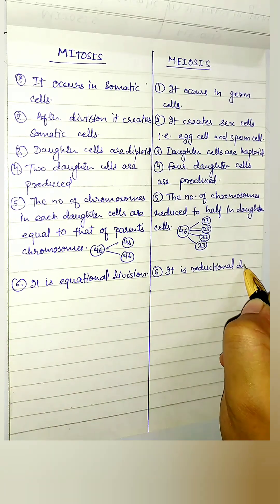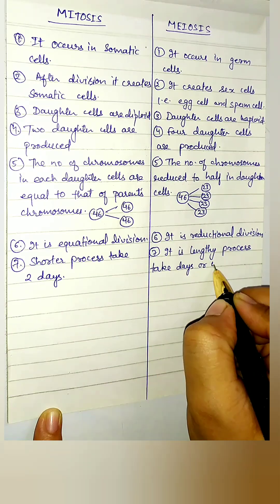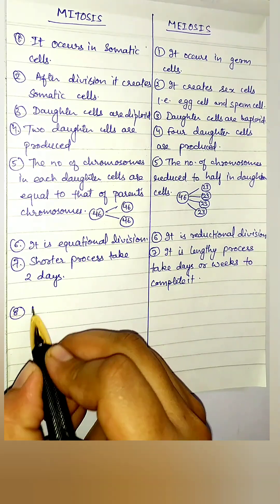Mitosis is an equational division. Meiosis is a reductional division. Mitosis is the shortest process which takes two days and meiosis is a lengthy process. It can take one week to complete.